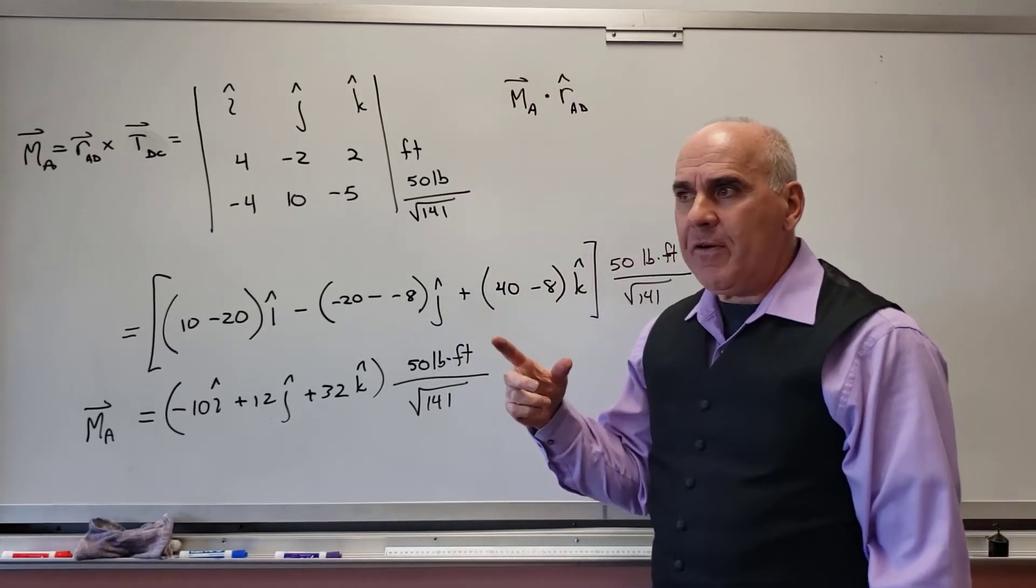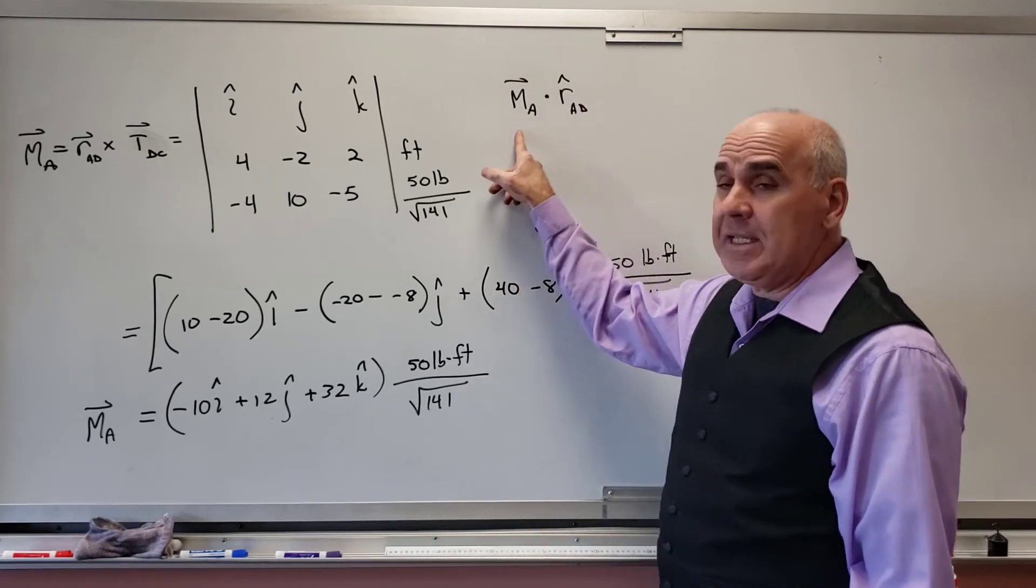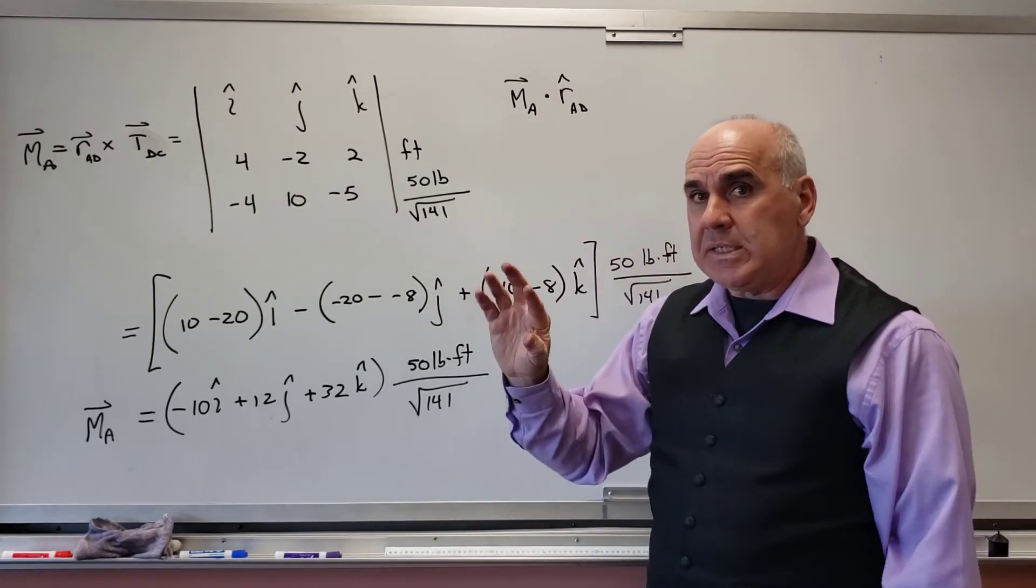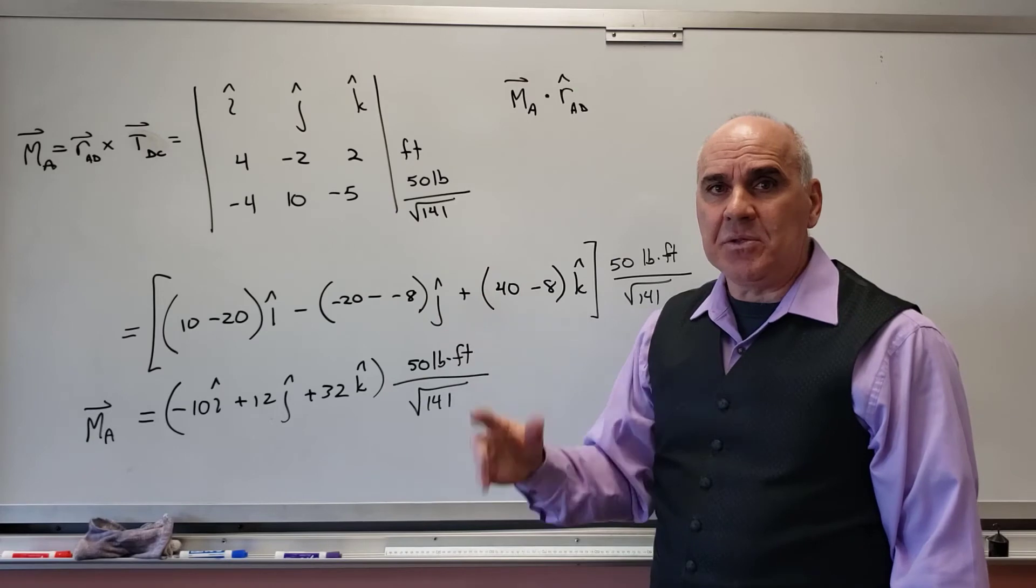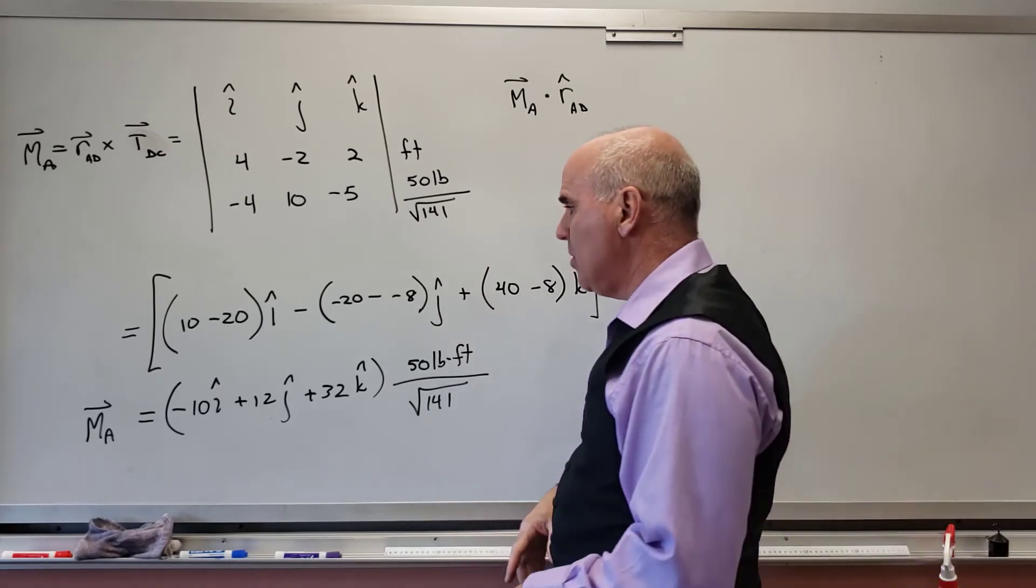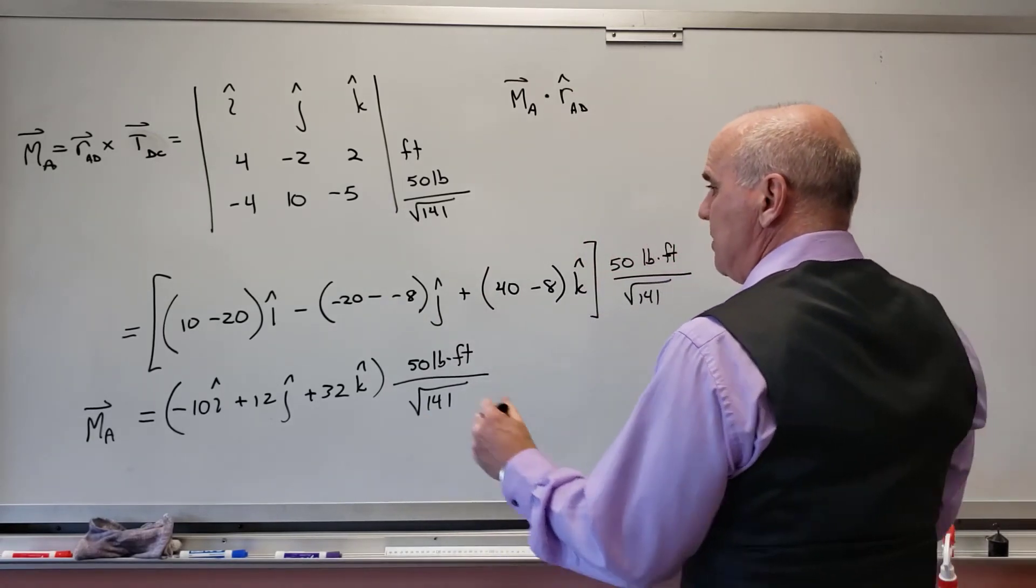Keep in mind, oftentimes I'll see R_AB dotted with M_A. The dot product is commutative. So it doesn't matter which of those comes first. So it'll go either way.